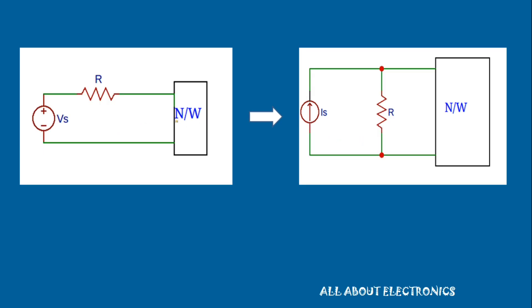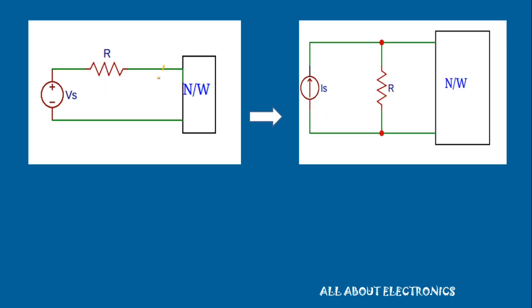During the transformation, the characteristics of the network do not change. That means the voltage across terminal AB and the current entering into node A will remain the same after the transformation. Let's say the voltage across terminals AB is Vx and the current entering node A is Ix. We can write Vx = Vs − Ix·R, which is the voltage drop across resistance R.